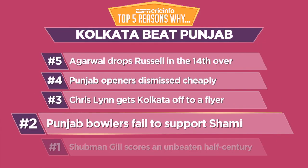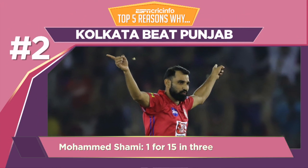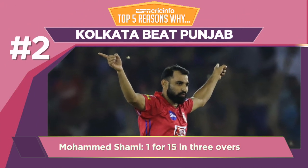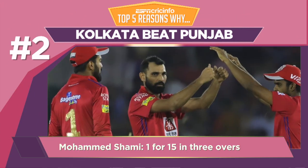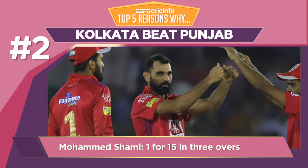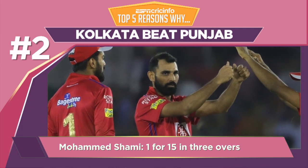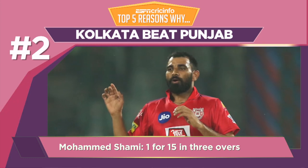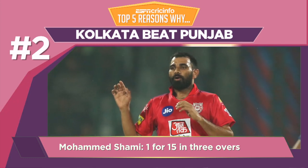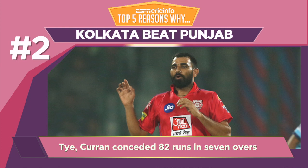Reason number 2: Punjab bowlers failed to support Shami. Mohamed Shami put in an impressive performance and picked up the wicket of the dangerous Andre Russell at a crucial juncture in the game. He also had the best economy in the match across both sides.